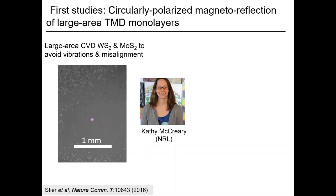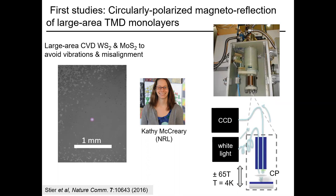Our first experimental studies used large-area TMD monolayers grown by chemical vapor deposition by Cathy McCreary at the Naval Research Lab. We use large-area samples because any vibrations that occur during pulse field measurements don't affect the result. Here's a picture of one of our pulse magnets with a helium cryostat. The experiment was quite simple: white light from a xenon lamp, passed through a fiber, polarized right and left circularly, bounced off the sample, and the reflection spectrum measured.